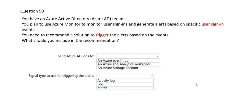Let's see question 50. The keywords here are 'user sign-in' and 'trigger.' The story is: you need to monitor user sign-ins. For example, you are working for a client — some ABC client — and you are accessing their systems by signing in. ABC client wants to monitor who is signing into their systems. You want to use Azure Monitor to monitor that and generate alerts based on specific user sign-in events. The question asks: what is the solution to trigger those alerts?